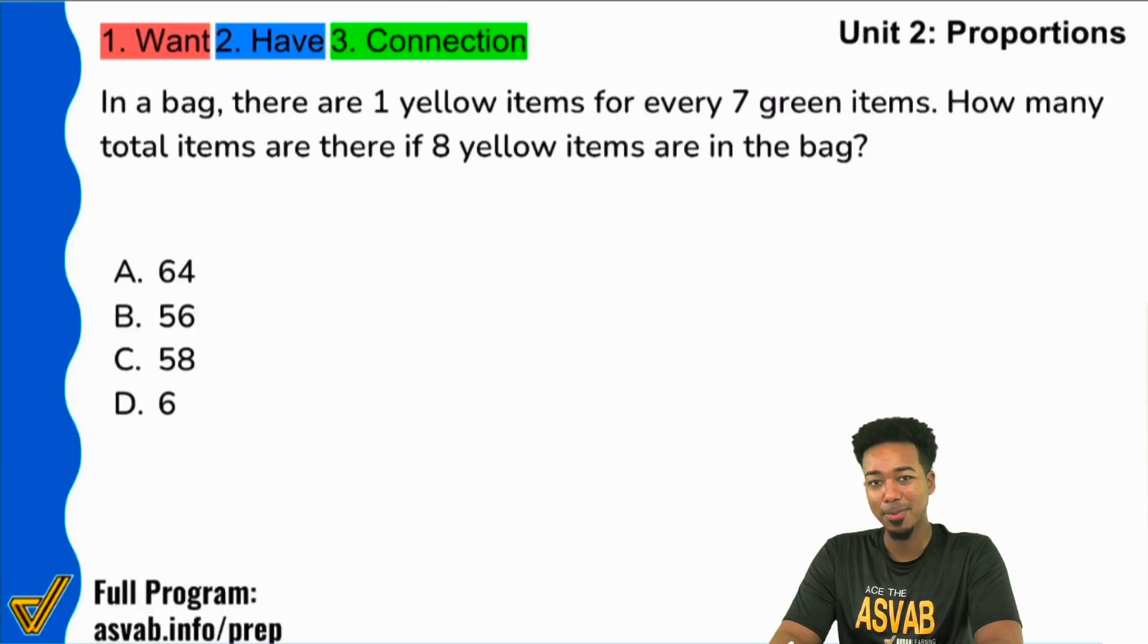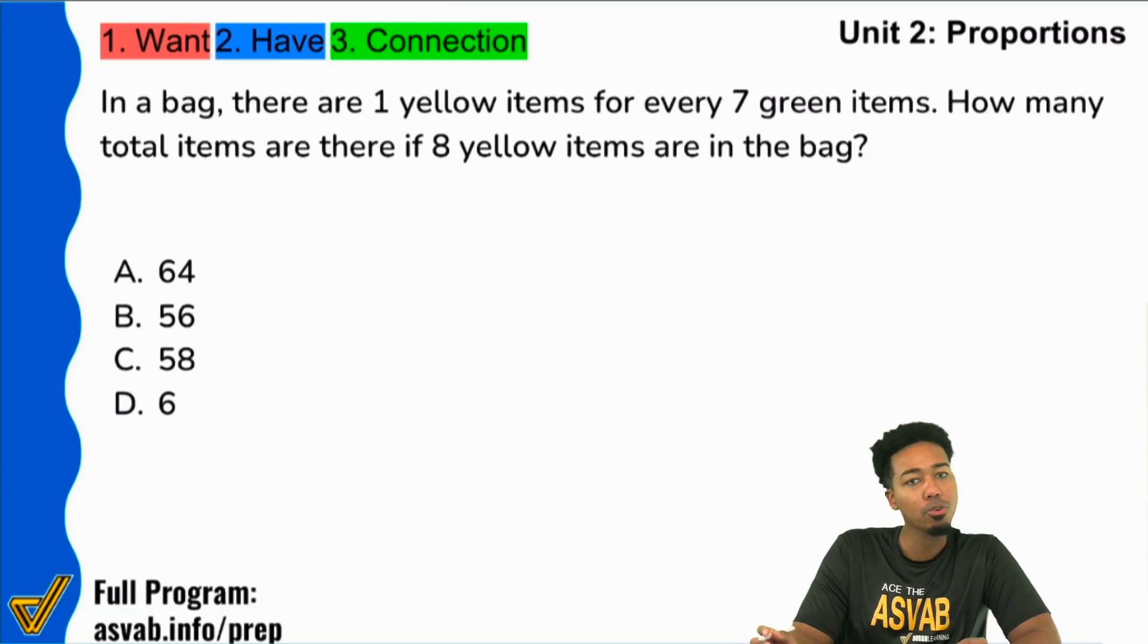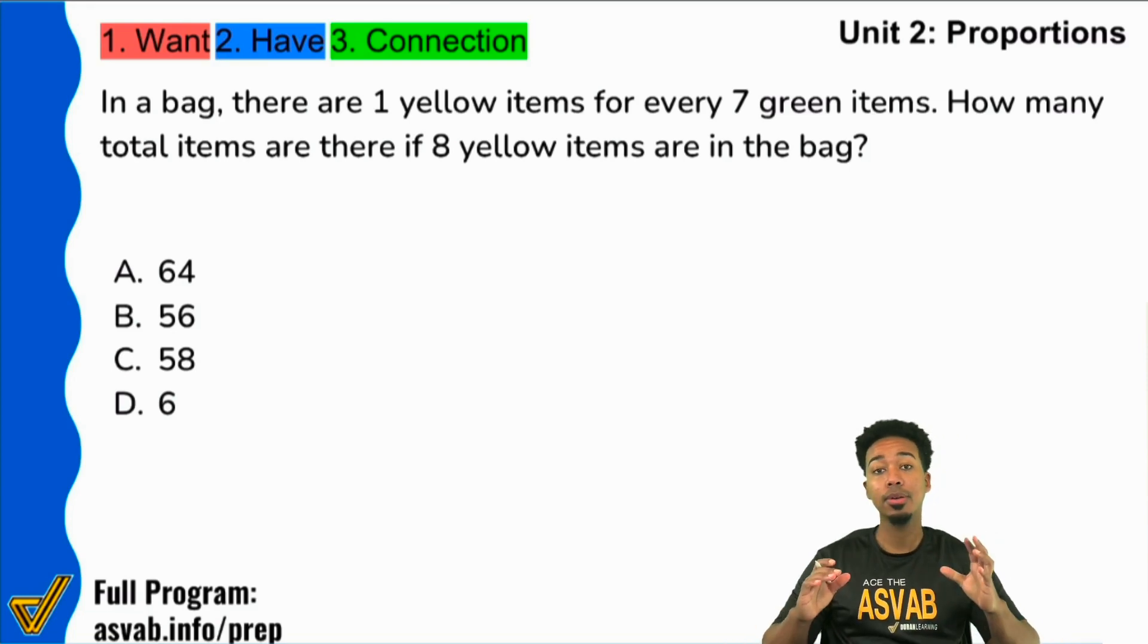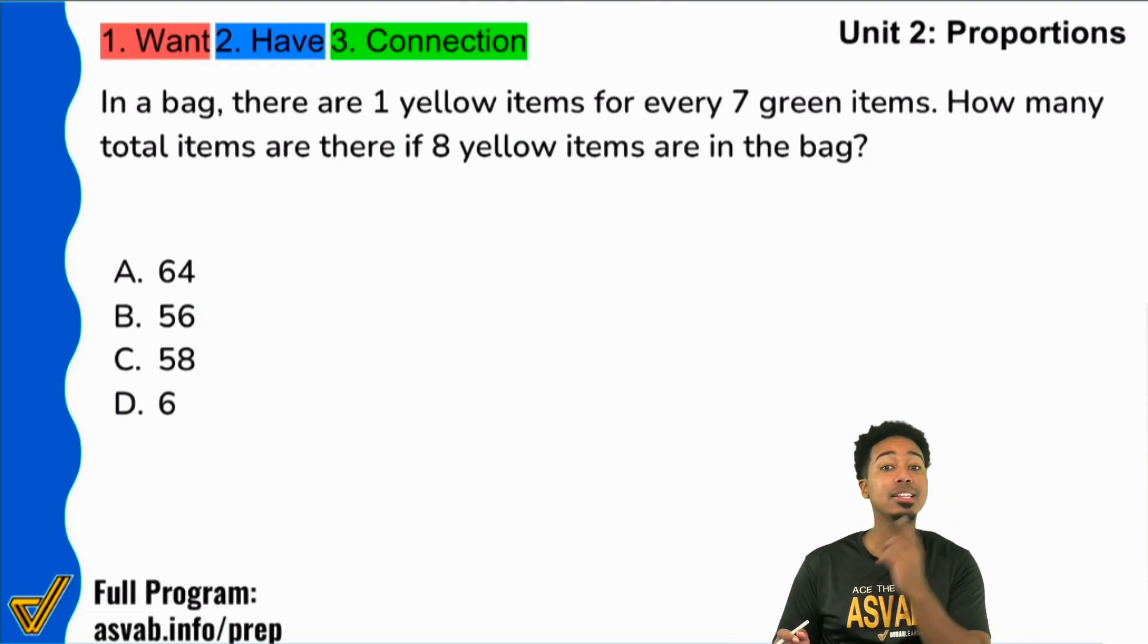Welcome in, welcome in my ASVAB party people. Coach Anderson here and what we're going to be doing is checking out a proportion problem that I'm hoping if you've gotten enough practice you can get this done in less than 10 seconds. No real, like for real, seriously, not even joking. This is something that you should be able to do fairly quickly once you notice what needs to be done. So let's get into it. Let's get started, let's have fun.